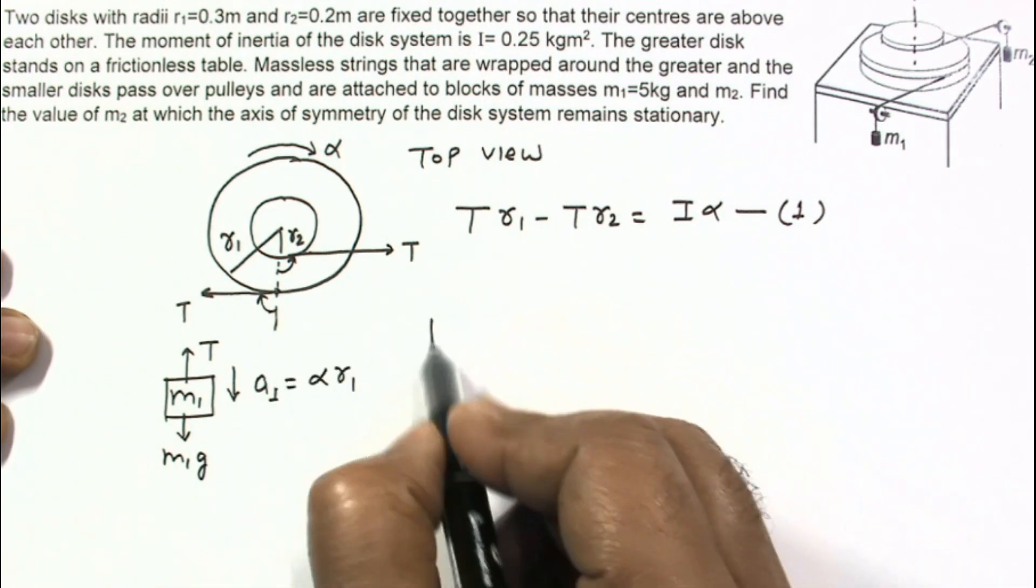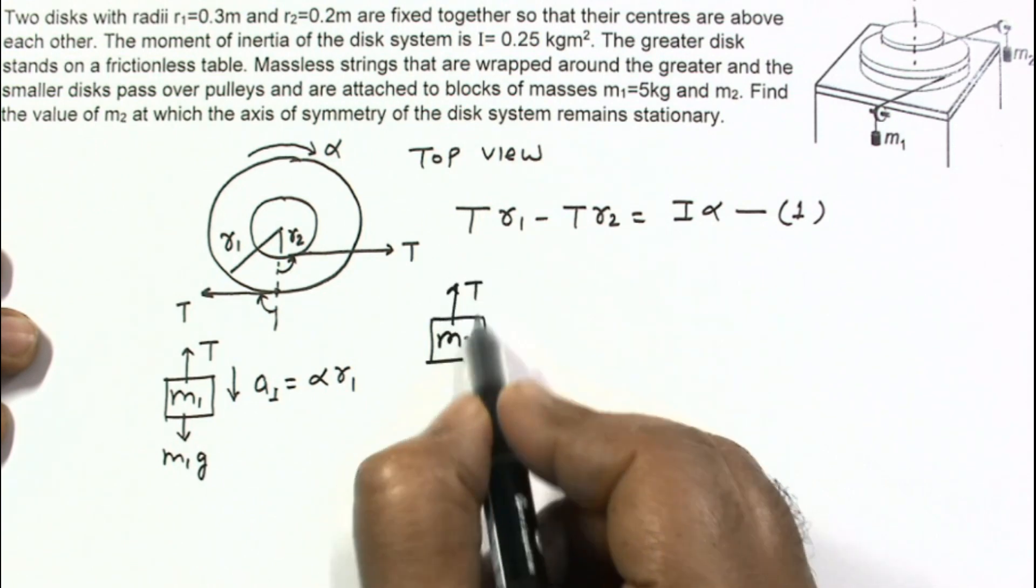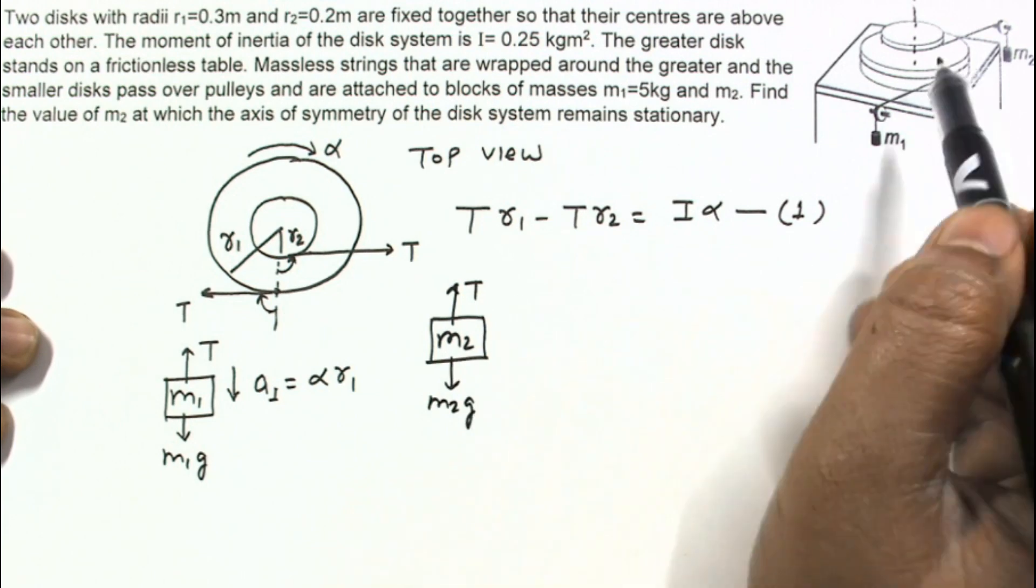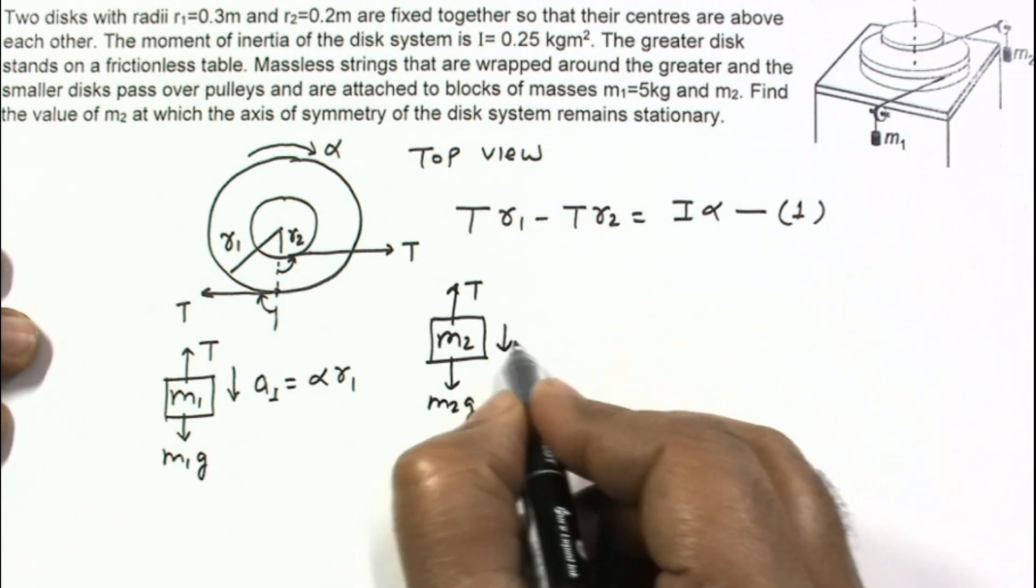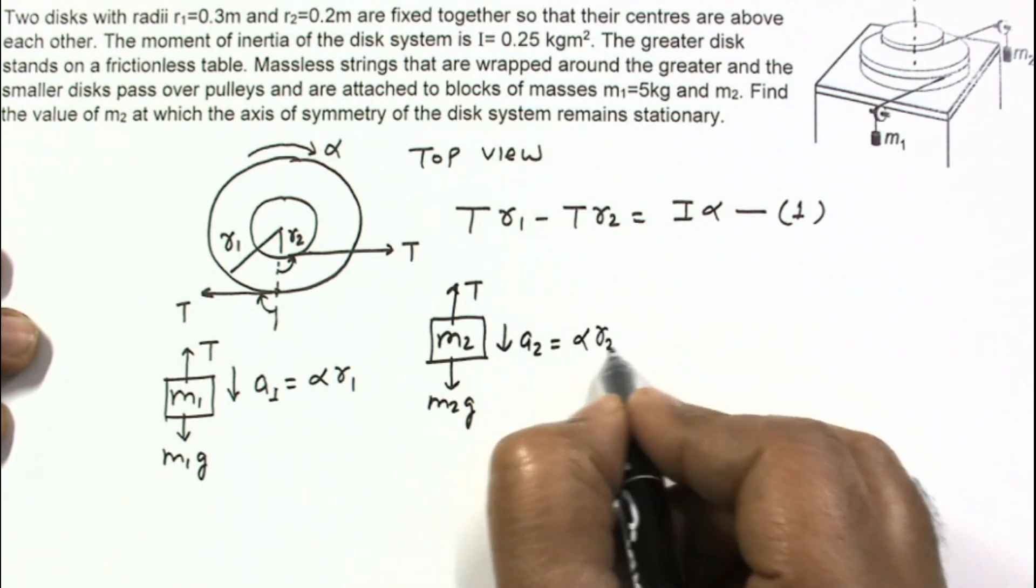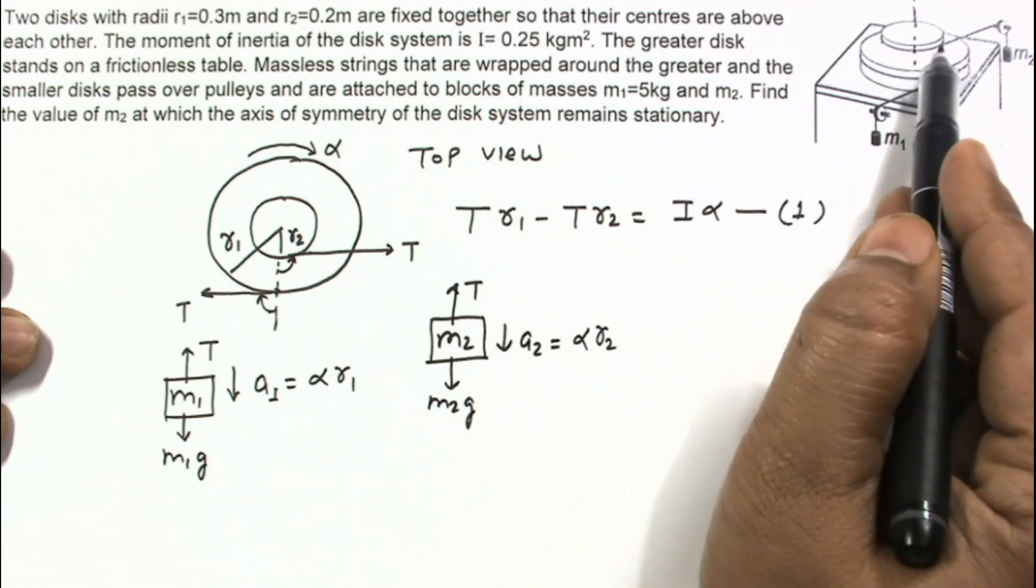In a similar way, for M2, free body diagram of M2: tension is upwards and its weight is downwards, M2G. And acceleration of M2, let's say A2, and this A2 will be alpha times R2, equal to acceleration of this point of the disc system.